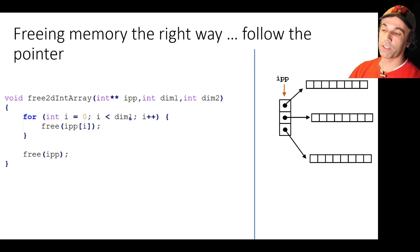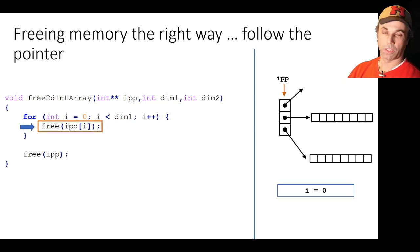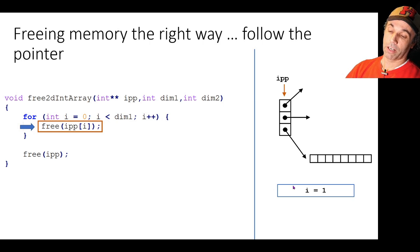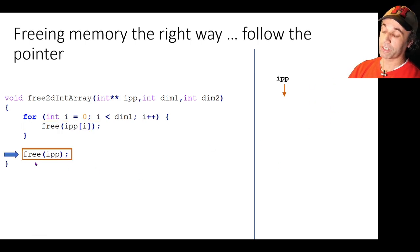We're going to iterate from 0 to dim1. So that's 3, up to 3 because we've got three elements here. So what do we do? So first we call free on IPP[0]. i is 0 and that will free this row. Then we go around the loop again. Now i is 1. We call free on IPP[1] and now that memory is freed up. We go around the loop again. Now i is 2 and now we call free on IPP[2]. Now we've freed up those three rows. Now we can go here and free IPP and the memory is freed.